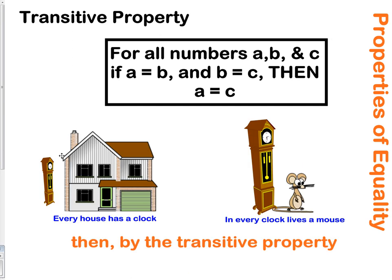The transitive property is very similar to the law of syllogism. For all numbers A, B, and C, if A equals B and B equals C, then A must equal C.